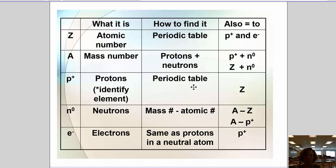That's on the periodic table. That's the same as your atomic number, Z. Neutrons help us identify our isotope. That's mass number minus atomic number. If we rearrange our equation, protons plus neutrons, so either A minus Z or A minus p⁺. Then the electrons in a neutral atom are the same as your protons.